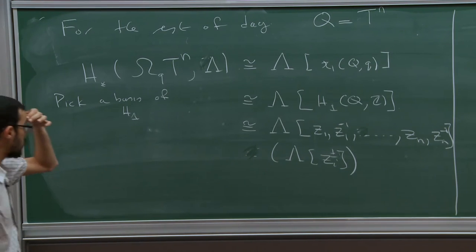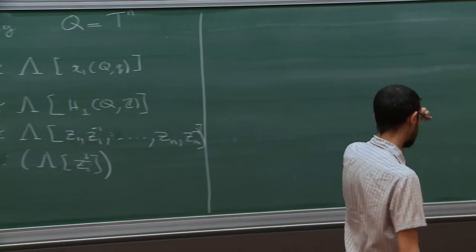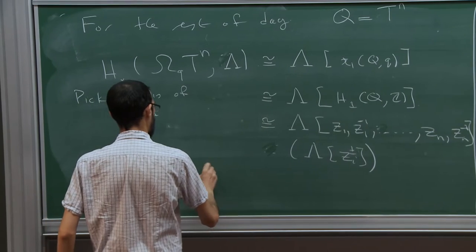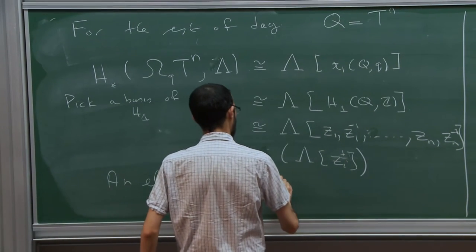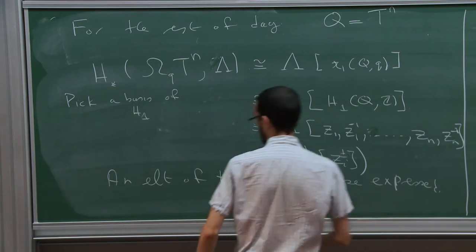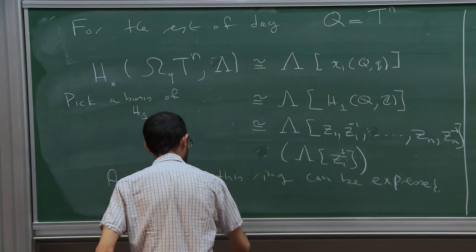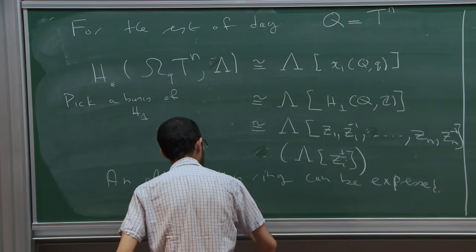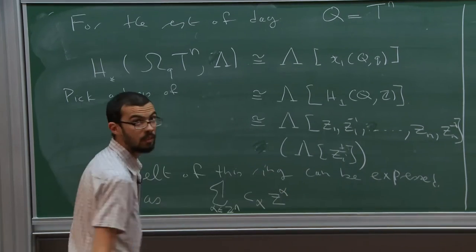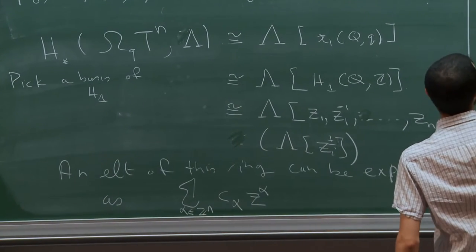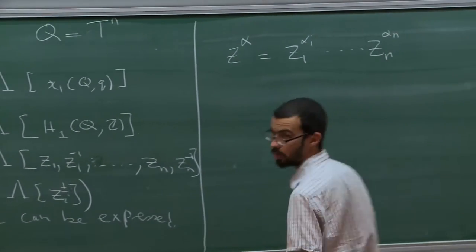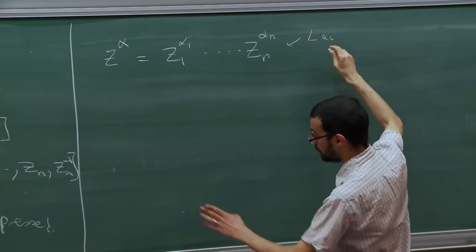An element of this ring can be expressed as a sum over alpha in Z^n of C_alpha times Z^alpha, where Z^alpha equals Z_1^{alpha_1} times ... times Z_n^{alpha_n}. These are the Laurent polynomials — that is a finite sum.